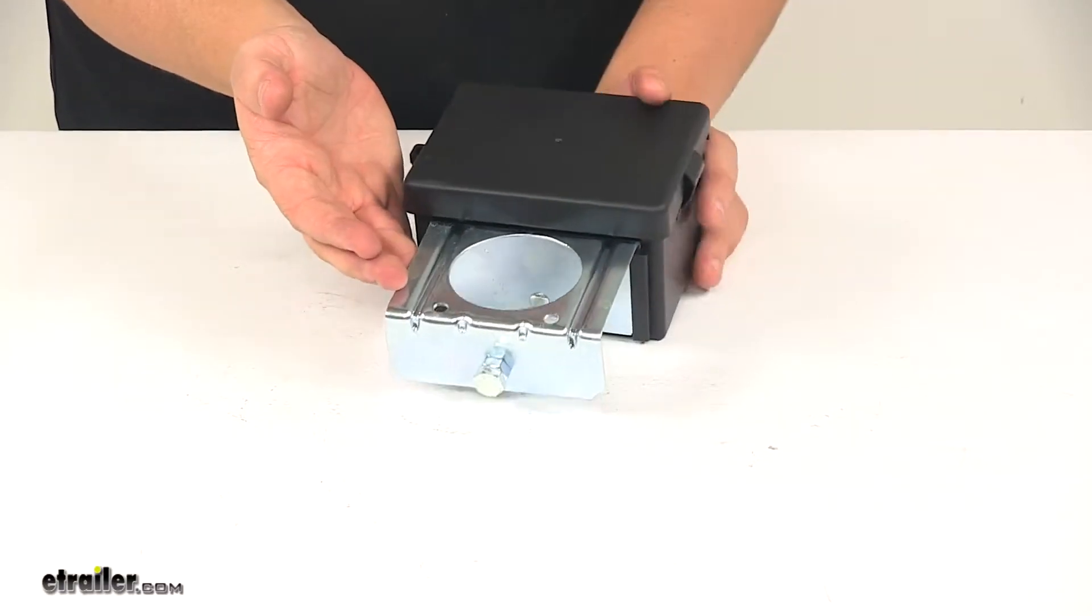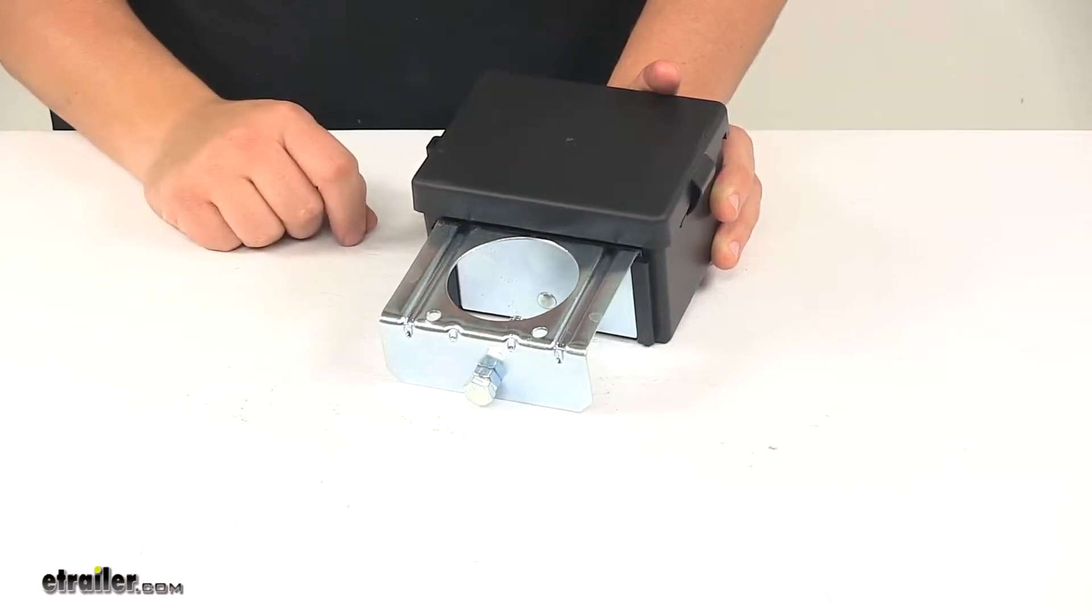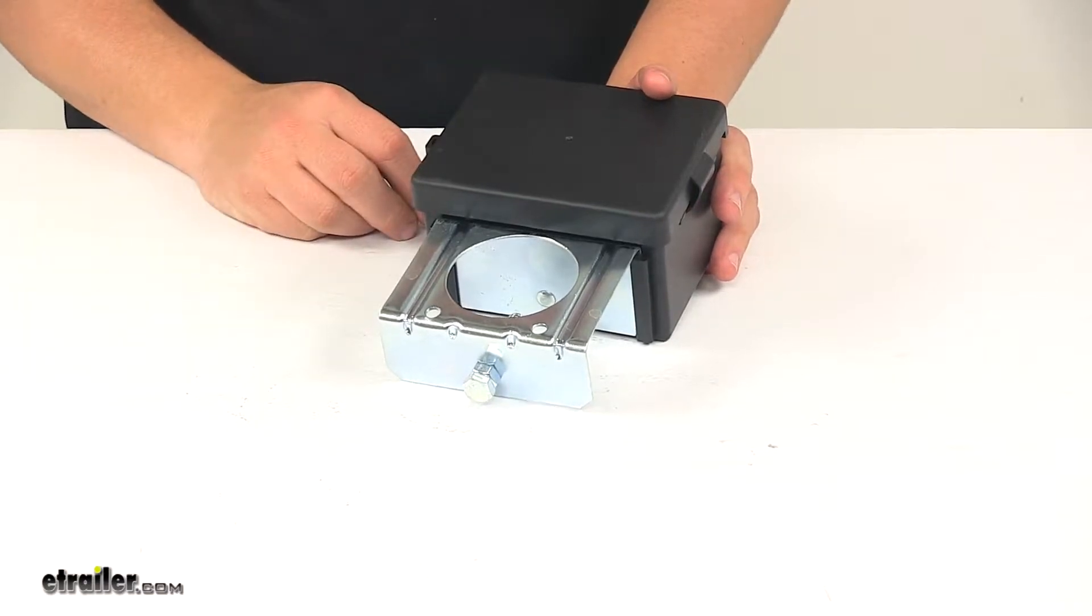Again, this could easily clamp onto your trailer frame or around your jack post. This hole right here has a diameter of two and nine-sixteenths of an inch, or you could also choose to weld this to your trailer frame.